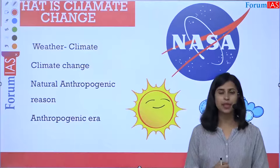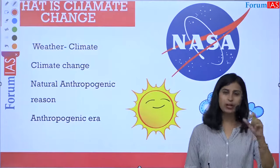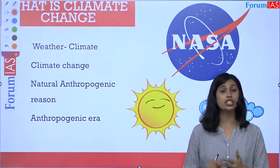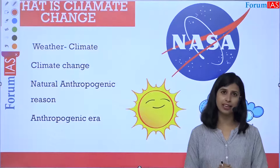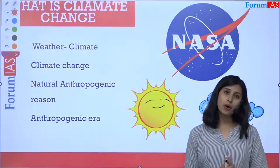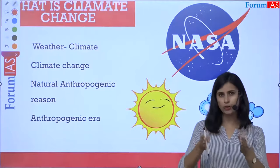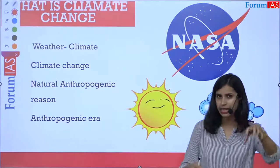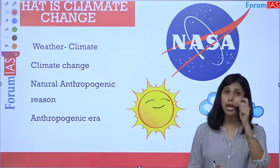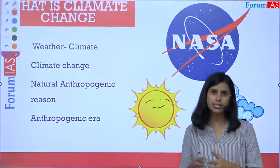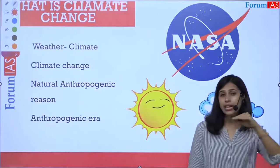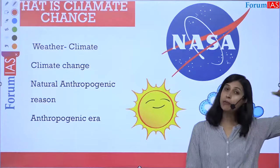Weather refers to the atmospheric conditions of any given area at a short period of time — how much heat, or precipitation, or how much rain is experienced. For example, the sun is coming out in Delhi today, there is rain in Pune. This daily atmospheric report is called the weather. Whereas weather over a particular area over a longer period of time is called climate.